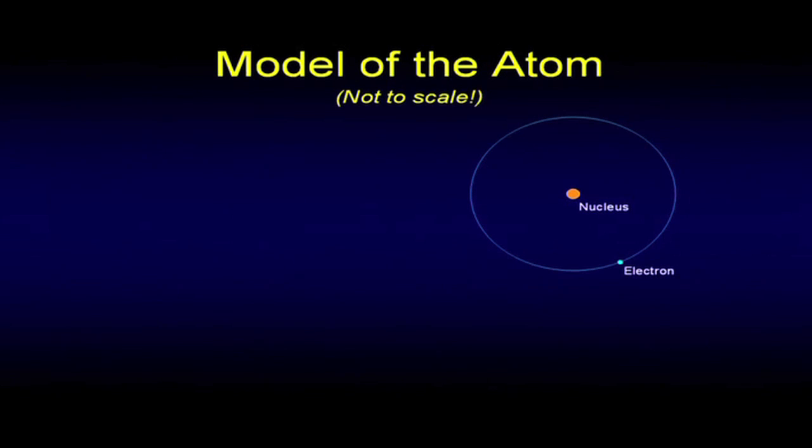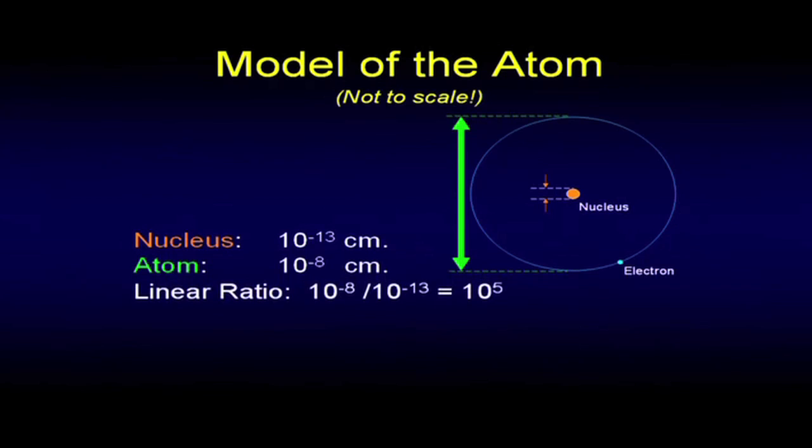Let's talk about scale a little bit. The nucleus is about 10 to the minus 13 centimeters. That's very, very small. The atom itself is about 10 to the minus 8 centimeters. It's small, but substantially larger than the nucleus. How much larger? The ratio of those things, 10 to the minus 8 divided by 10 to the minus 13, is 10 to the fifth. In other words, the atom is 100,000 times the size of the nucleus linearly.